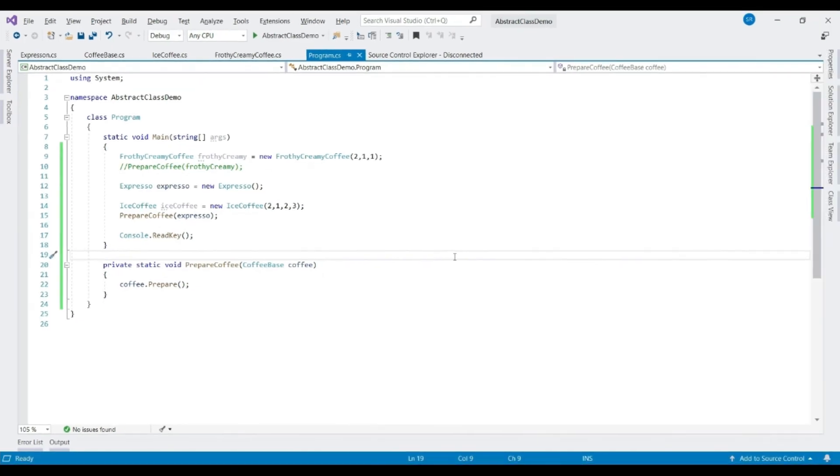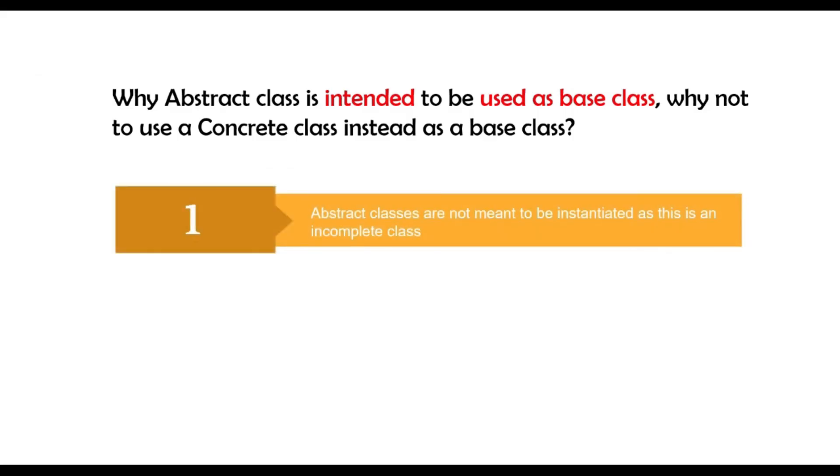To summarize the answer to our question. Abstract classes are termed as incomplete class because it can have incomplete abstract method. So suppose if C sharp allows you to create object of this class, then if someone calls the abstract method using the object, then what would happen? There would be no actual implementation of the method to invoke. Abstract classes are not business entity. As you have seen in our example, in reality, there is no coffee base. There are coffees like Espresso, Ice Coffee, etc. Mainly, abstract classes are there to support polymorphism, also code reusability. That's all for abstract class. Make sure you watch abstract method and my polymorphism videos to make the concept more robust. The links are available in the description. I hope you found this video helpful. If you did, then please hit like and subscribe button to see more such contents. Thanks.